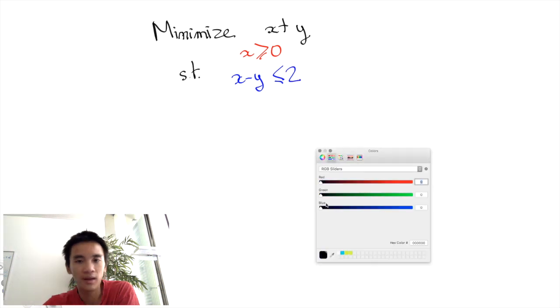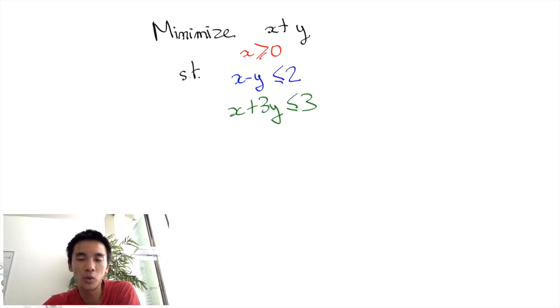To understand it, let's consider the simple example of a two-dimensional linear program. Let's consider this one: minimize x plus y with x non-negative, x minus y at most 2, and x plus 3y at most 3.